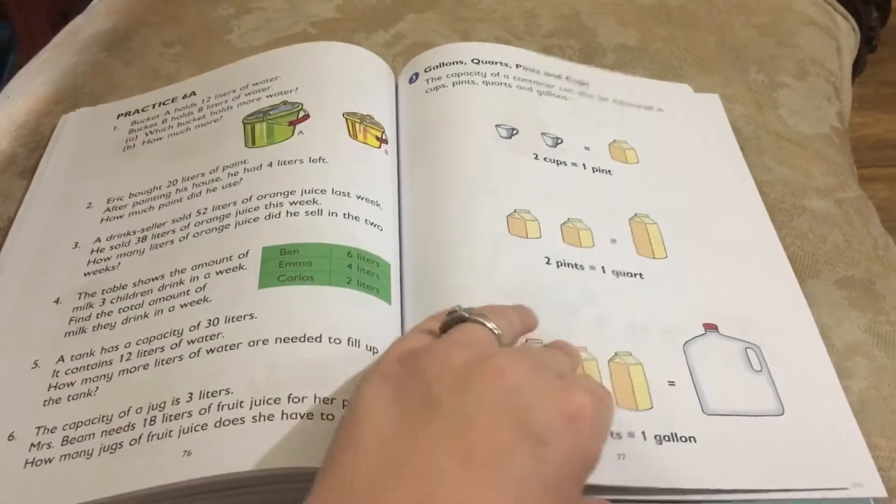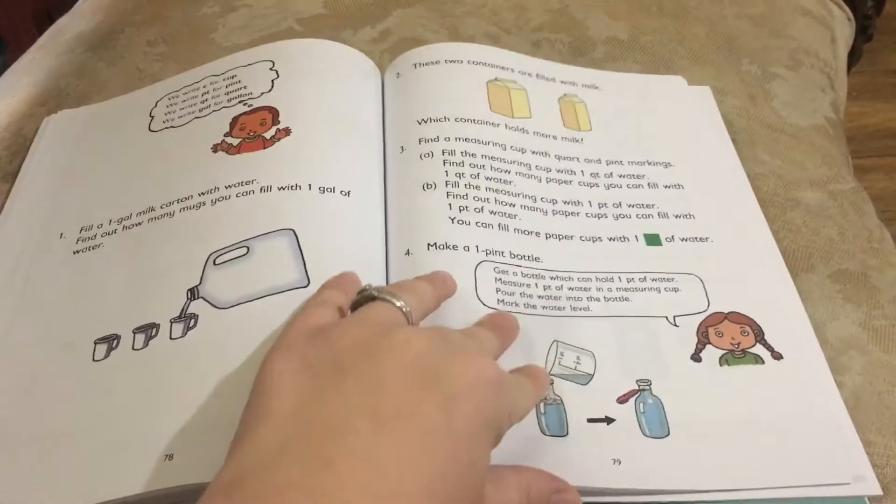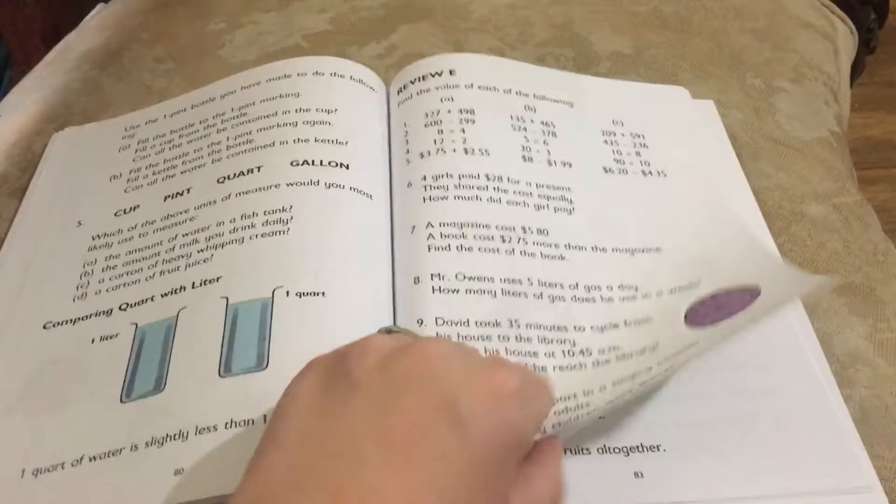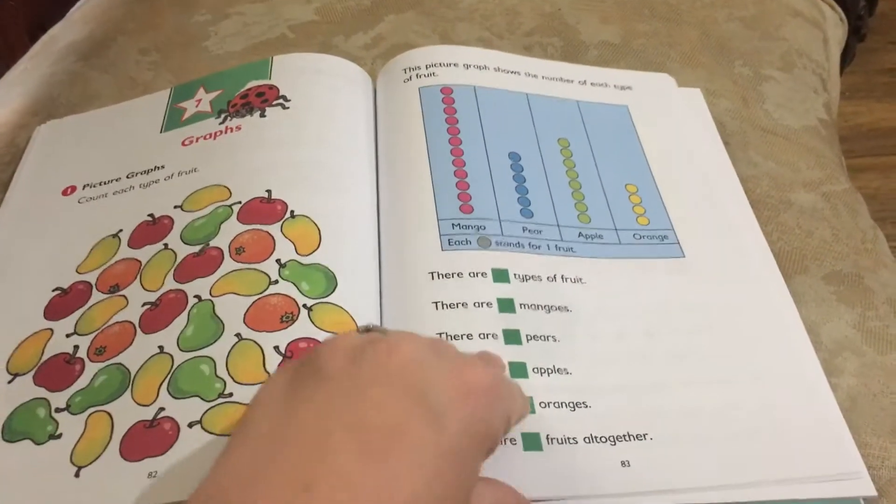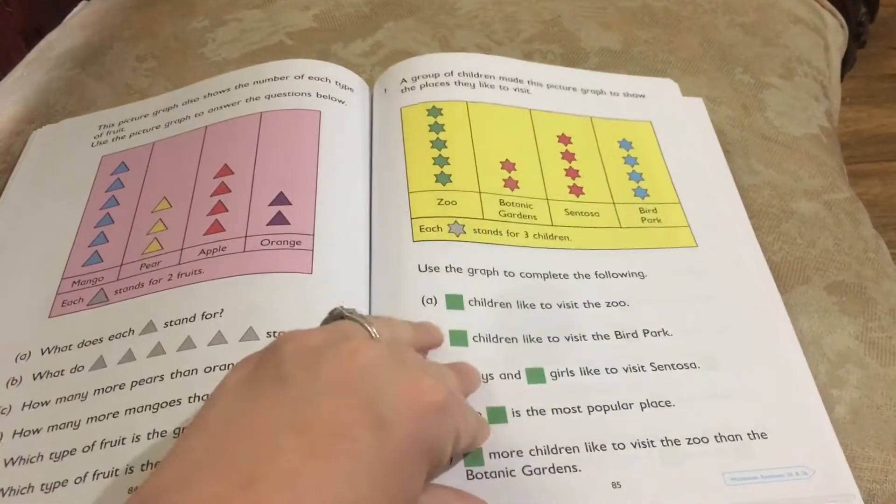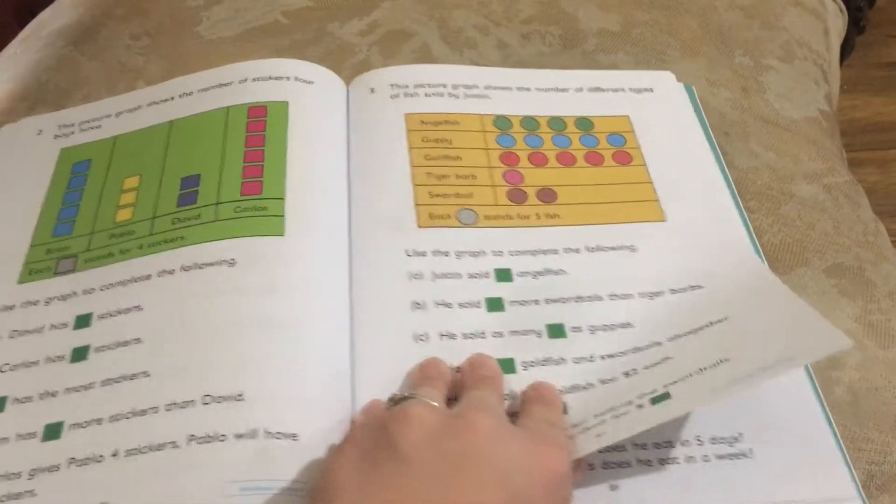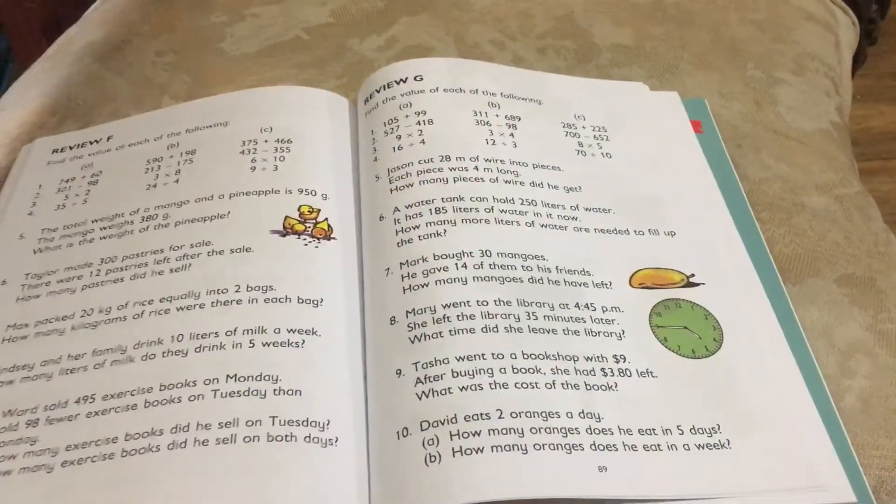You can start your child with the 2A and then go into the 2B, or you could start at the 1B and go into 2A. That would be two semesters as well. They recommend just starting wherever your child is. It's not like this is necessarily a second grade level.